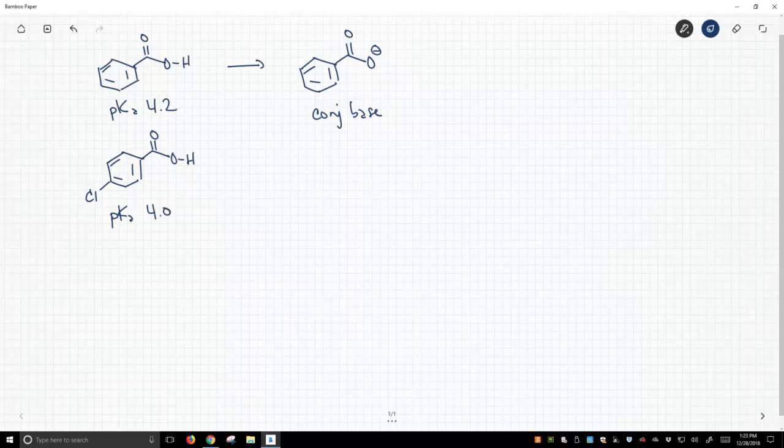So, 4-chlorobenzoic acid is a stronger acid. Stronger than what? Stronger than benzoic acid up here with a pKa of 4.2.